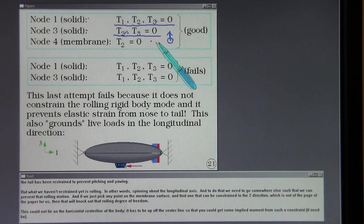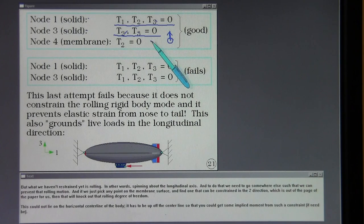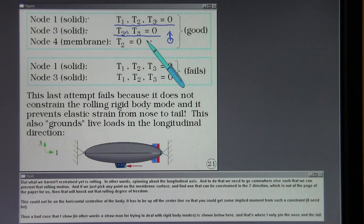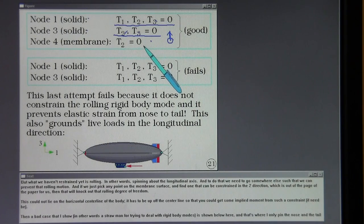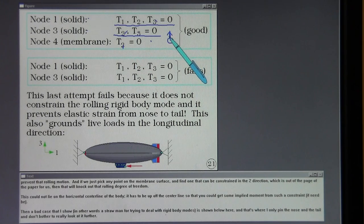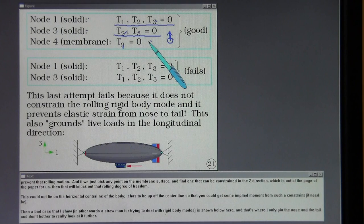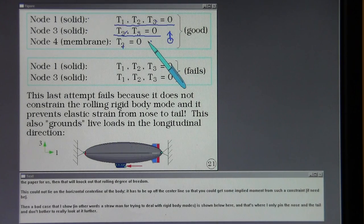But what we haven't restrained yet is rolling. In other words spinning about the longitudinal axis. And to do that we need to go somewhere else such that we can prevent that rolling motion. And if we just pick any point on the membrane surface and find one that can be constrained in the two direction which is out of the page of the paper for us. Then that will knock out that rolling degree of freedom. This could not lie on the horizontal center line of the body. It would have to be up off the center line so that you could get some implied moment from such a constraint if need be.